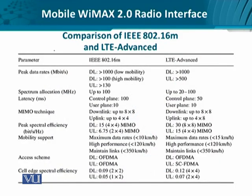In summary, we can compare 802.16M — Mobile WiMAX 2.0's physical layer and data link layer — and LTE Advanced across several parameters, starting from peak data rate in downlink and uplink for both low mobility and high mobility scenarios, as well as the spectrum that can be allocated to each.